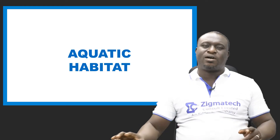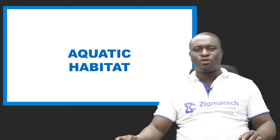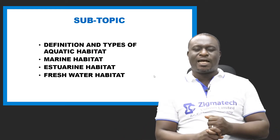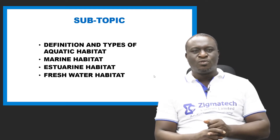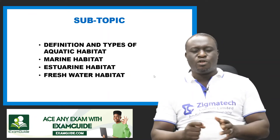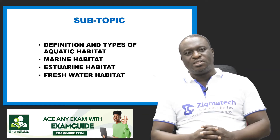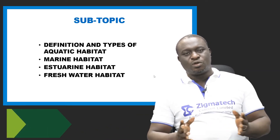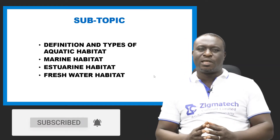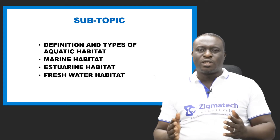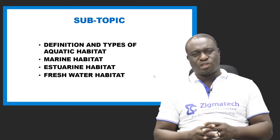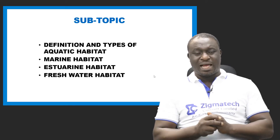In this particular topic, there are sub-topics we're going to cover. These include the definition and types of aquatic habitat. Next, we're going to discuss in detail marine habitat — its definition, zones, characteristic features, organisms (both plants and animals), food chain structure, and factors that affect marine habitat.